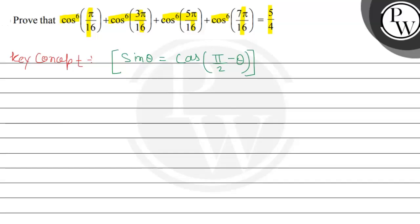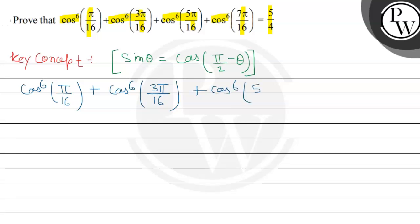The question is cos to the power 6 of π/16 plus cos to the power 6 of 3π/16 plus cos to the power 6 of 5π/16.